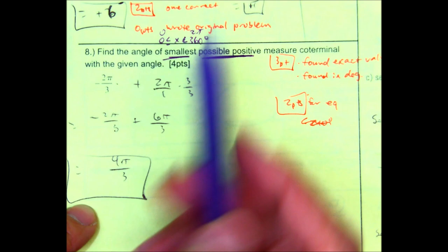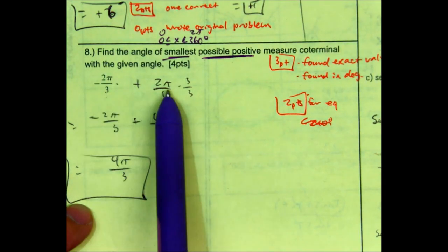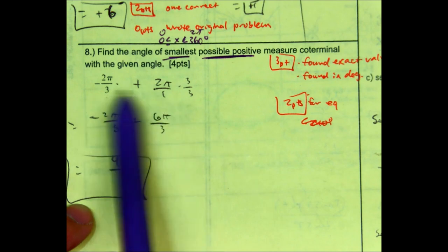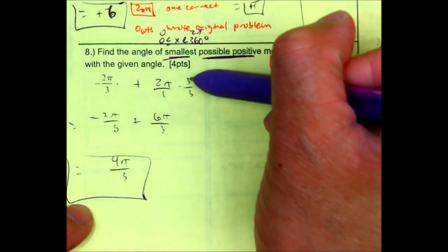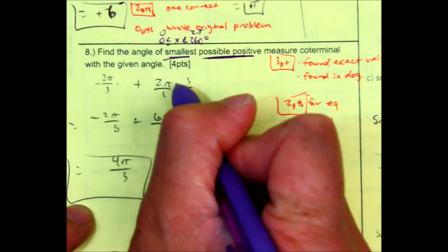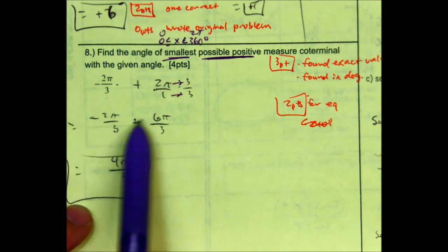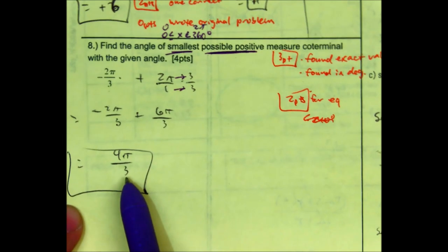So in this case, I only have to do one full rotation. So how do I add negative 2 pi over 3 plus 2 pi? Well, they have to have a common denominator. I'm going to use 3 over 3. So if I multiply across, I get 6 pi over 3. Negative 2 plus 6 gives me my answer of 4 pi over 3.